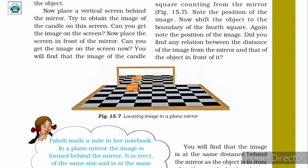For performing this activity, you require a chess board, a plain mirror, and a pencil sharpener. First, take a chess board and draw a thick line in the middle of it.